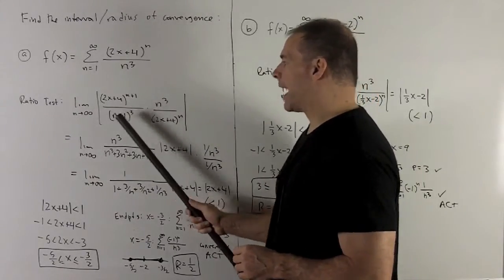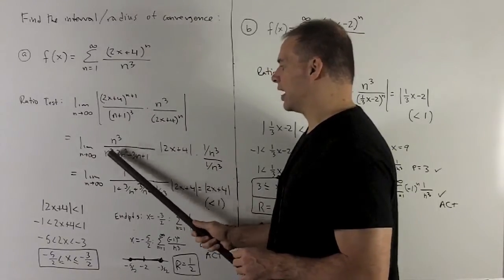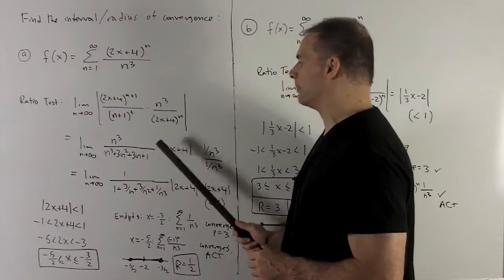And then my term on the bottom, the n plus 1 cubed, I can expand out as n cubed plus 3n squared plus 3n plus 1.